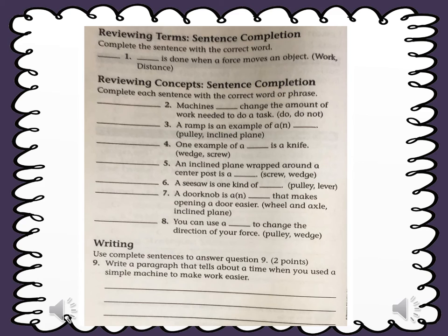Number 3. A ramp is an example of a pulley or an inclined plane. In the pulley, we have a wheel and axle, but in the inclined plane, we have a ramp that connects a lower level to a higher level.